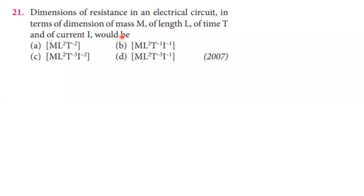Units and Dimensions: previous questions, second part. Question number 21 — dimensions of resistance in an electrical circuit in terms of mass M, length L, time T and current I. Resistance is equal to potential divided by current.